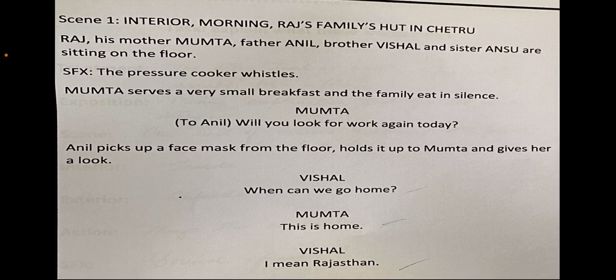When a character has a dialogue, put their name in the middle and write the dialogue right beneath it. For example: Mamta to Anil — 'Will you look for work again today?' Anil then doesn't answer directly — he first picks up a face mask from the floor and holds it up to Mamta, giving her a look. This particular action shows that coronavirus is present. Remember, the story we have written should be set in 2041. Then: Mamta — 'When can we go home?' Shall — 'I'm in Rajasthan — this is home.' When there is dialogue, use that format.